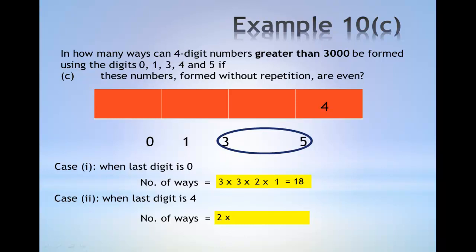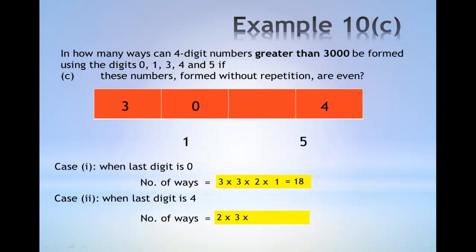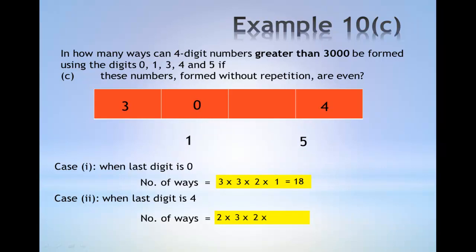The second case occurs when the last digit is 4. The first digit can be 3 or 5, which gives 2 possibilities — for example, 3. The second digit can be 0, 1 or 5 — 3 possibilities — for example, 0. The third digit can be any of the remaining 2 digits: 1 or 5 — for example, 1. The last digit is fixed at 4. This gives a total of 12 ways. The total number of ways is the sum of the 2 cases, giving a total of 30 ways.